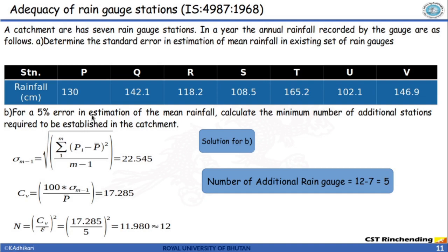Let's try to solve a numerical on the adequacy of rain gauge stations over a catchment. A catchment has seven rain gauge stations, and the annual rainfall recorded by the gauges is given. Part A asks to determine the standard error in estimation of mean rainfall in the existing set of rain gauges. Part B asks: for a five percent error in estimation of mean rainfall, calculate the minimum number of additional stations required to be established in the catchment. I have solved part B; you can try part A as it is straightforward.